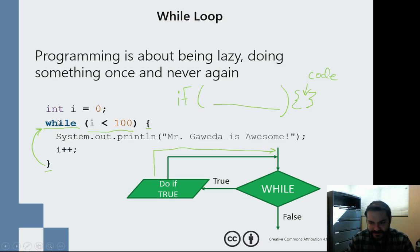So in this case, int i equals zero, all right, i, while i is less than 100. i is zero, so that right now is zero. So that's true, so we do a system.out.println. Mr. Gaweda is awesome. i plus plus, we increment i. We make i suddenly become one. So then we do the while loop again. We reassess the while loop.